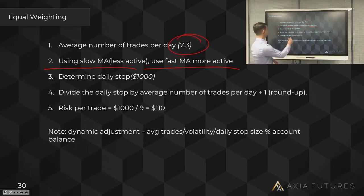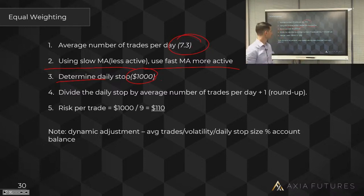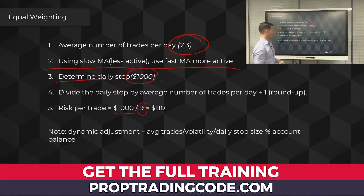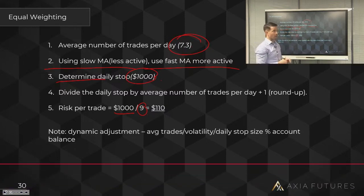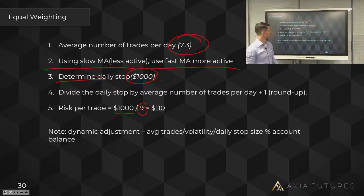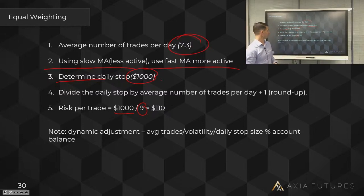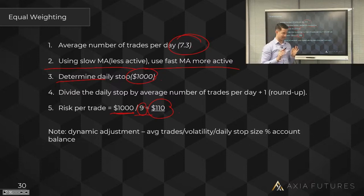For a day trader, I recommend using a 10-day moving average of how many trades you do daily. Now, determining your daily stop: let's assume you have a $1,000 daily stop. You divide it by a denominator — I prefer to be very conservative, because you're always going to trade more than you think. Round up your average to 8, add one for a double layer of conservatism, and you get $1,000 divided by 9, meaning you risk $110 per trade.